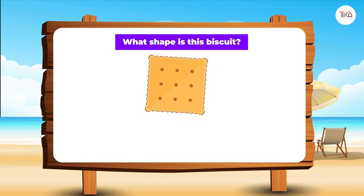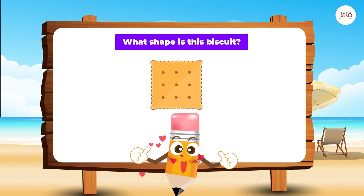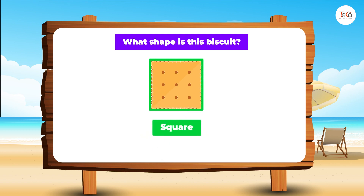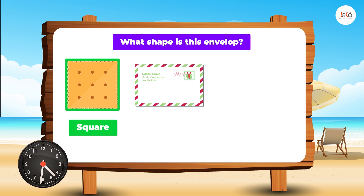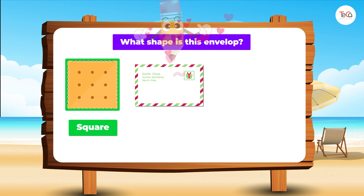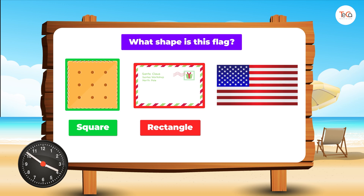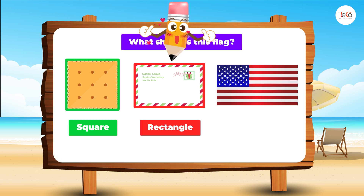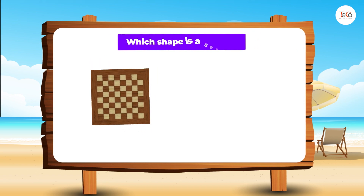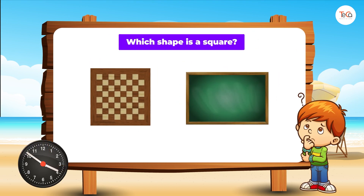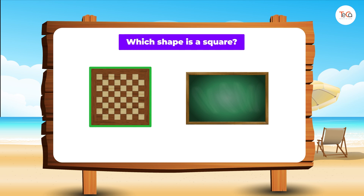What shape is this biscuit? Yes, good job — it's a square. What shape is this envelope? Great, it's a rectangle. What shape is this flag? Correct, it's a rectangle. What shape is this? Good job, the shape of the chess board is a square.